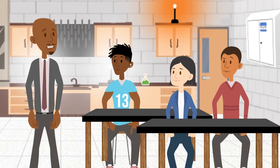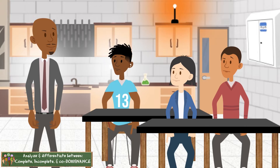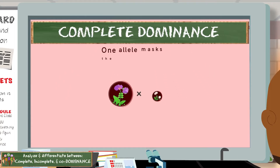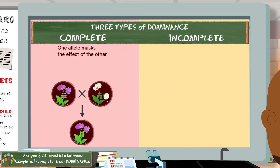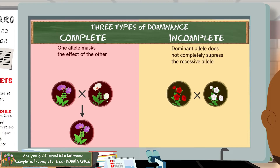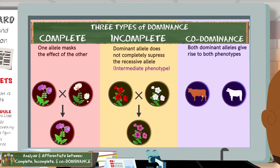Dominance actually can work in three ways. Standard dominance is the most common, where one allele masks the other. It could also be incomplete dominance, where a heterozygous genotype for petal color in roses produces a mixture — pink petals. Or co-dominance, where both phenotypes show up, as in spotted animals or blood type AB.